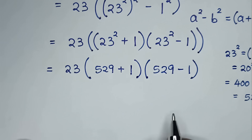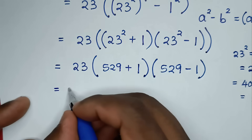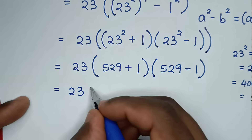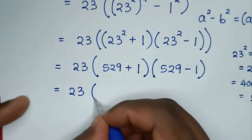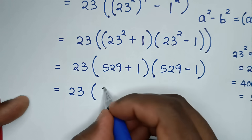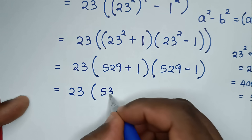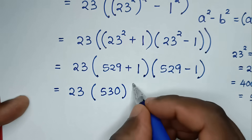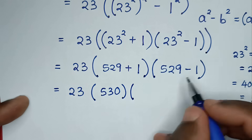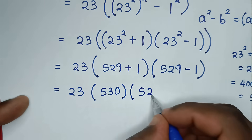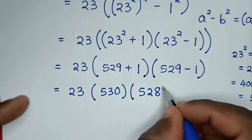So it will be equal to 23, then bracket — this plus this gives 530, bracket, bracket — this minus this gives 528, bracket.